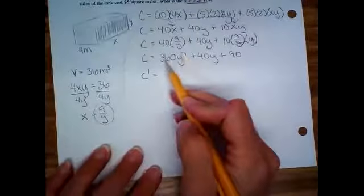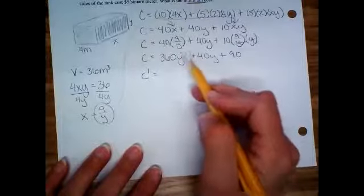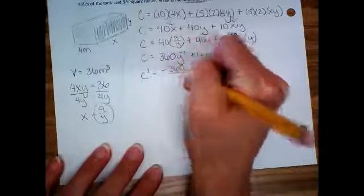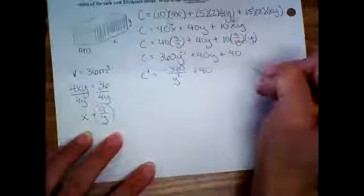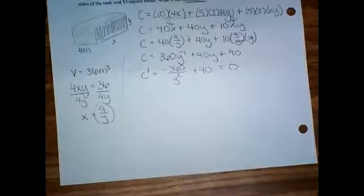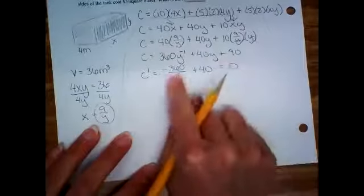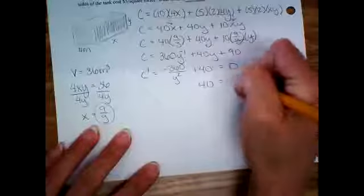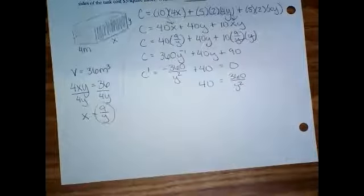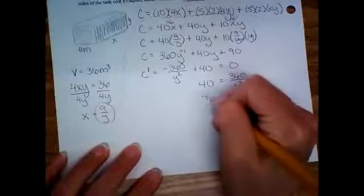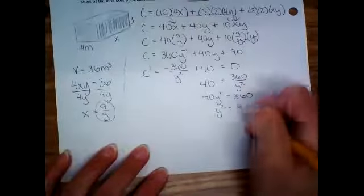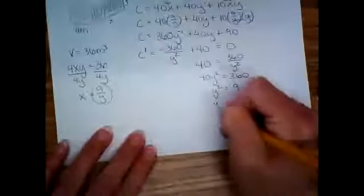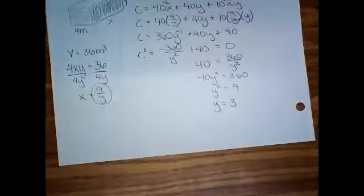Now the derivative. C prime. You would bring this negative down. It would be negative 360. And then what would be the new exponent? Good. So I'm going to write it as negative 360 over Y squared. Plus 40. And then that's it. Equals zero. So I'm going to add over this 360 over Y squared. I'm going to add that to the other side. Nearly there. What next? Yep. Times Y squared. Divide by 40. And so Y squared equals nine. And so Y is three. Normally you would put plus and minus when we square root, but we don't do negative. I mean, you can't have a negative side of a tank, right? So three.